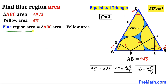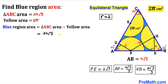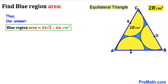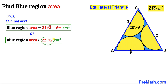For the final step, the blue shaded region area = area of triangle ABC − yellow area = 24√3 − 6π cm². This is approximately 22.72 cm². Thanks for watching and please don't forget to subscribe for more exciting videos.